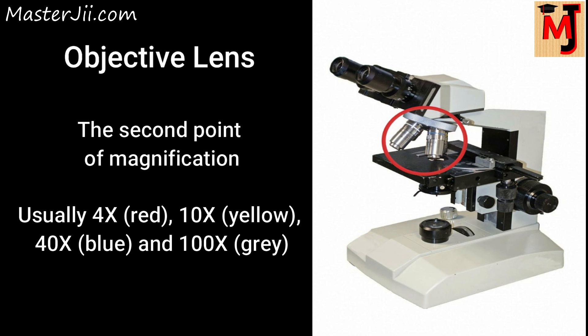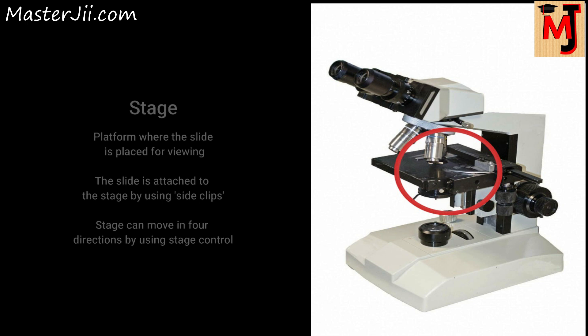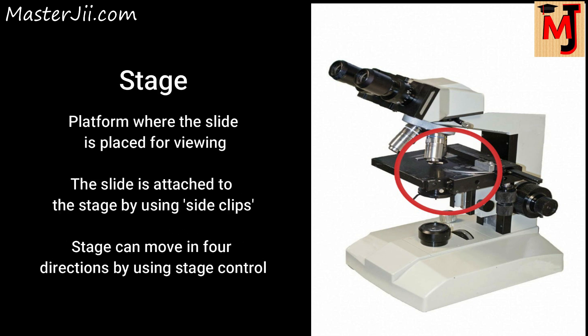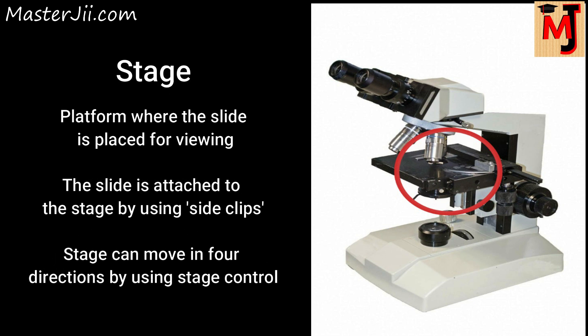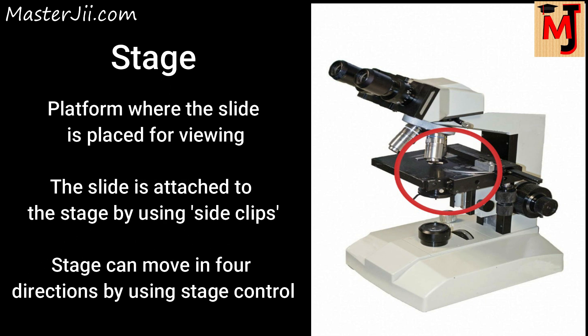and the oil immersion lens at 100 times is gray. The stage is the platform where the slide is placed for viewing. The slide is attached to the stage by using the stage clips. It is movable in four directions by using the stage control.